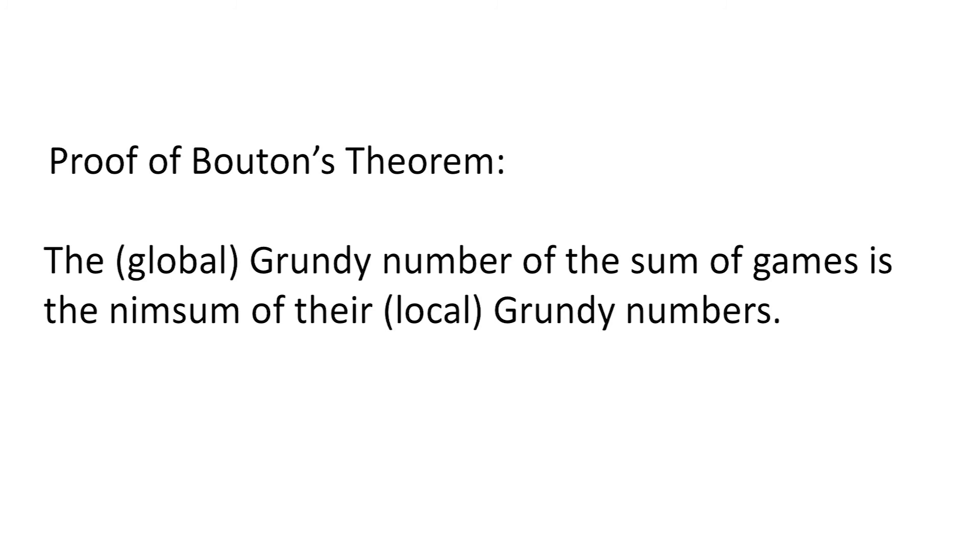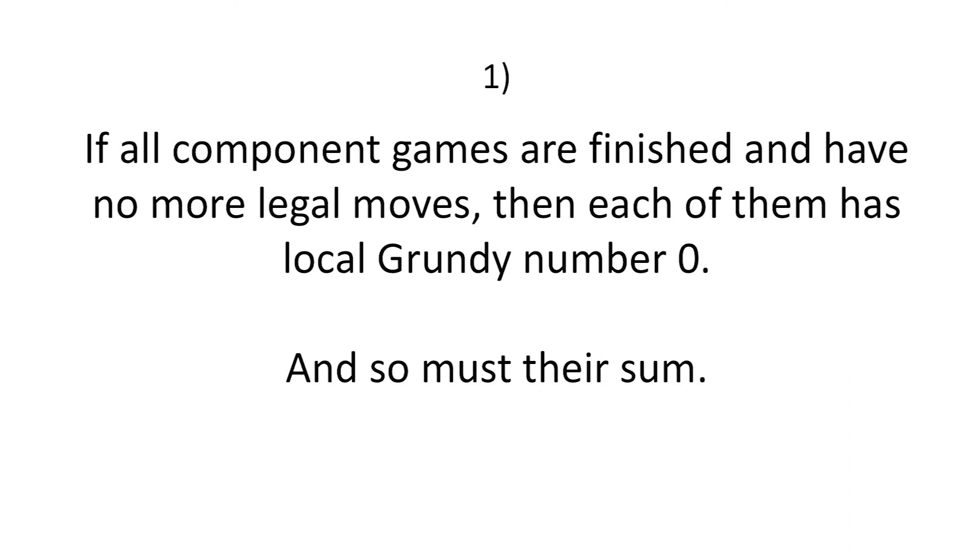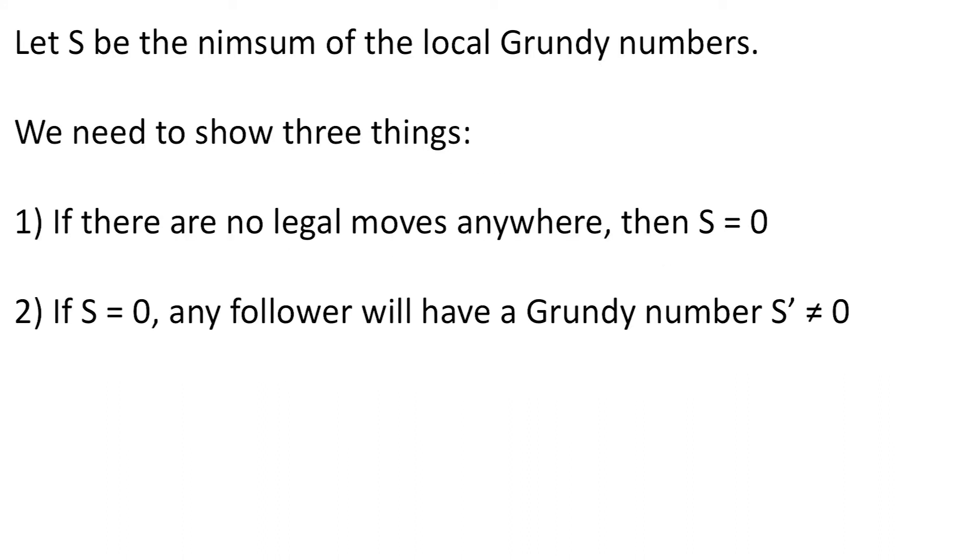We'll now prove our generalized Botan's theorem. Let S be the nim sum of the local Grundy numbers. To show that S is also the Grundy number of the total game, we need to show three things. First, if there are no legal moves, then S is zero. This is very easy because in this case all local Grundy numbers are zero, and so their nim sum is also zero. The second thing we need to show is that if S equals zero, then any follower S prime must be nonzero. To see this, we note that any local move will change the local Grundy number by some nonzero delta, and this same delta must be the change in the total S.